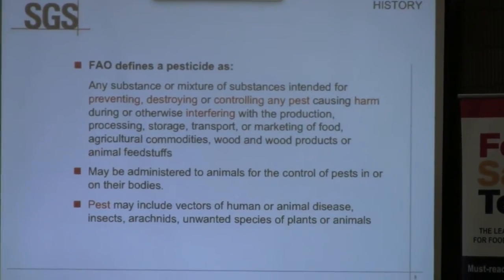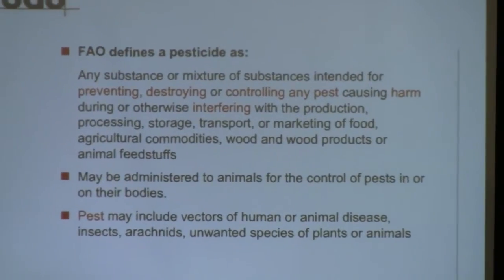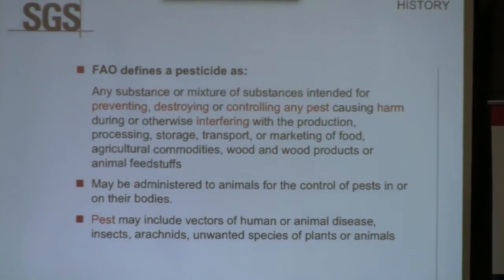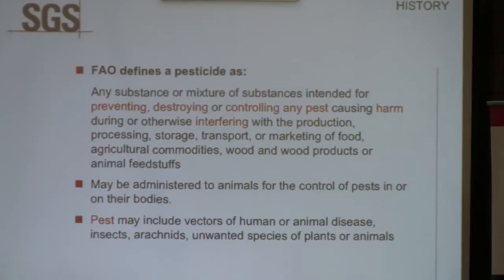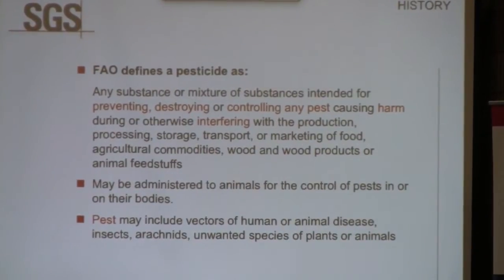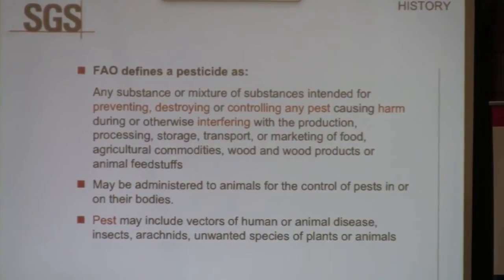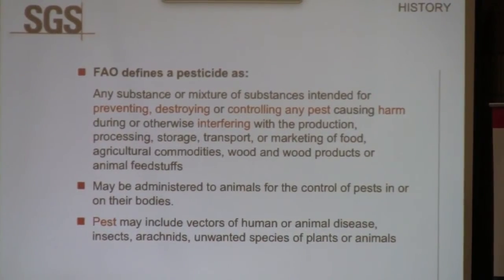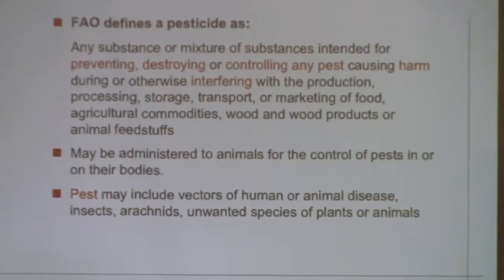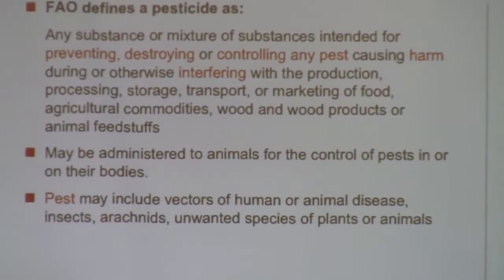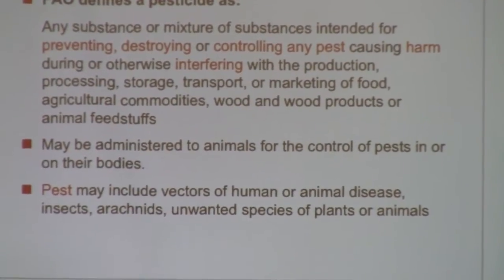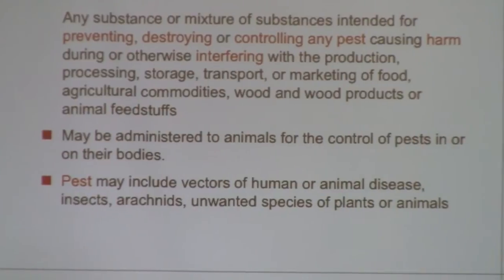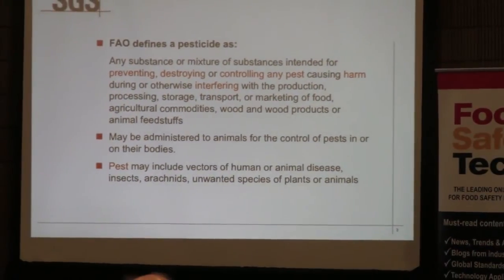First, how the FAO defines a pesticide — it's quite a long one. Any substance or mixture of substances intended for preventing, destroying, or controlling any pest. Down at the bottom they also define a pest, and although it may be those typical things we think of — insects, arachnids, unwanted plants — it's actually a bit broader than that. It includes factors of human and animal disease, and also unwanted animals.